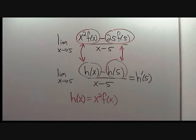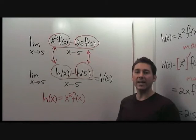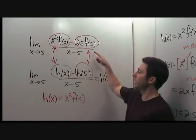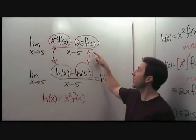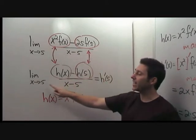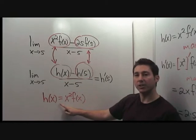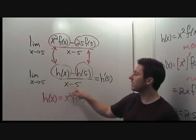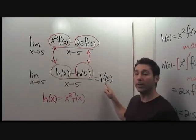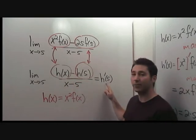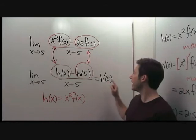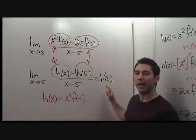Writing out the difference quotient for h exactly gives our original expression. Recognizing the pattern in the original limit tells us we can evaluate it by evaluating the limit of the difference quotient of this function h. Therefore, because this limit equals the derivative of h at 5, we can answer the question by evaluating h prime of 5.